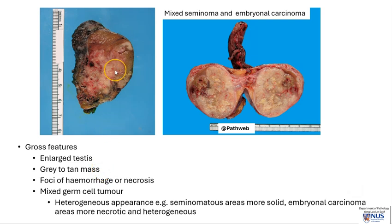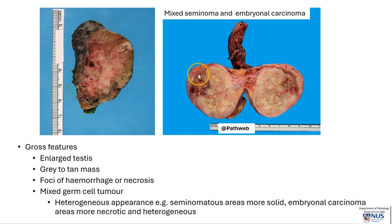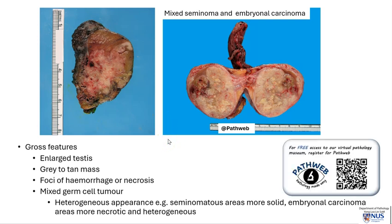Grossly, the testis is enlarged, and usually there will be a gray to tan mass. This often appears quite variegated with pale areas of necrosis and dark areas of hemorrhage. In a mixed germ cell tumor, there may be a more heterogeneous appearance. For example, this is a case of mixed seminoma and embryonal carcinoma — this more variegated-looking area is the embryonal carcinoma, and this more solid, pale, fleshy area is the seminoma. There is a separate video describing gross pathological features in PathWeb, our free online pathology resource, and the registration link is in the video description.